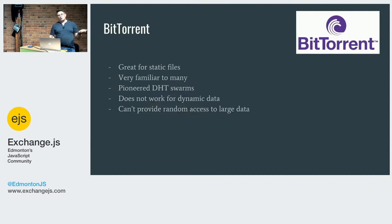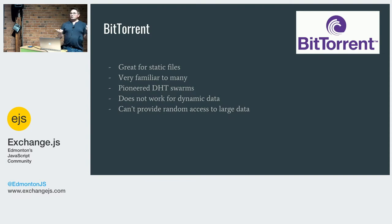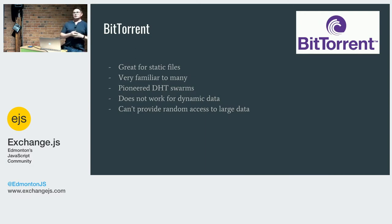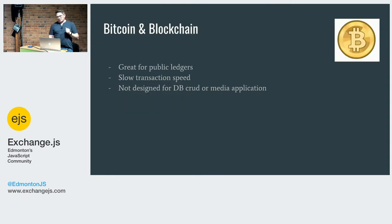The first one is BitTorrent — probably very familiar to many of you. It's great for static files like large movies, media, and music. It pioneered technologies that are reused in the peer-to-peer space, like DHT — distributed hash tables — ways to find peers and find information. Some cons: it doesn't work well for dynamic data, you can't really live stream over it, it's not designed for adding or updating, and it doesn't provide random access to parts of a file.